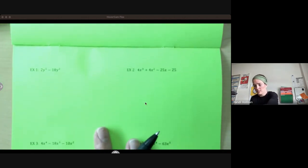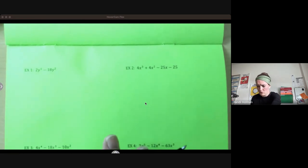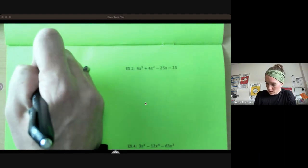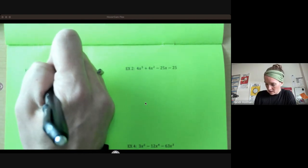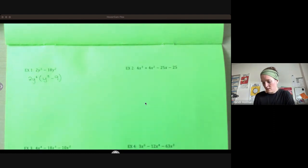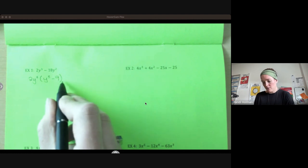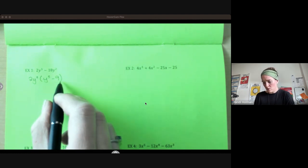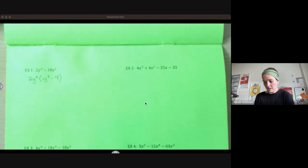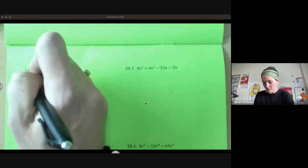So if we're just asked to factor completely, start with greatest common factor. Greatest common factor there is 2y². And then we're left with y³ - 9. Check to see if you can factor further. Oh, it almost looks like a difference of squares, but this isn't a square. So that's as far as we can go. We're done. That's my factored form.